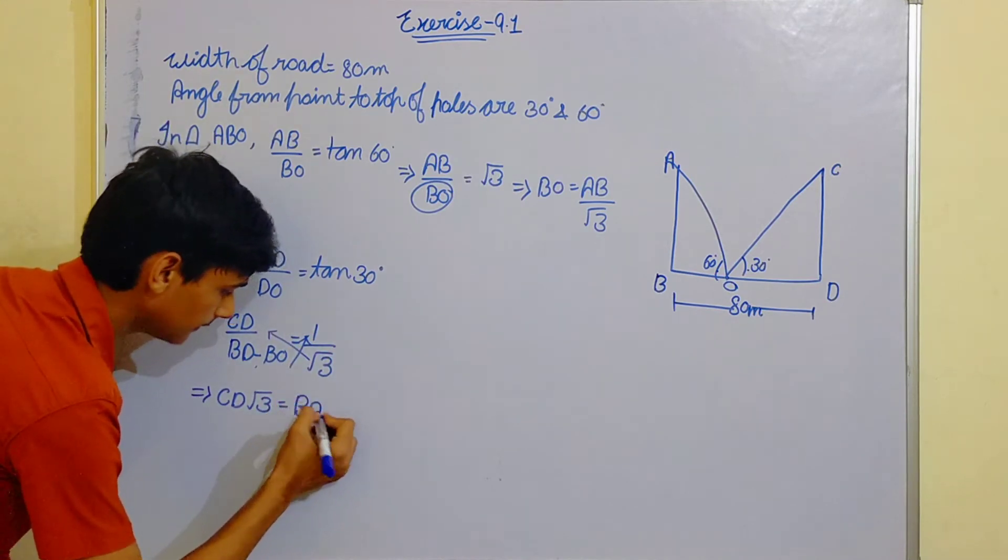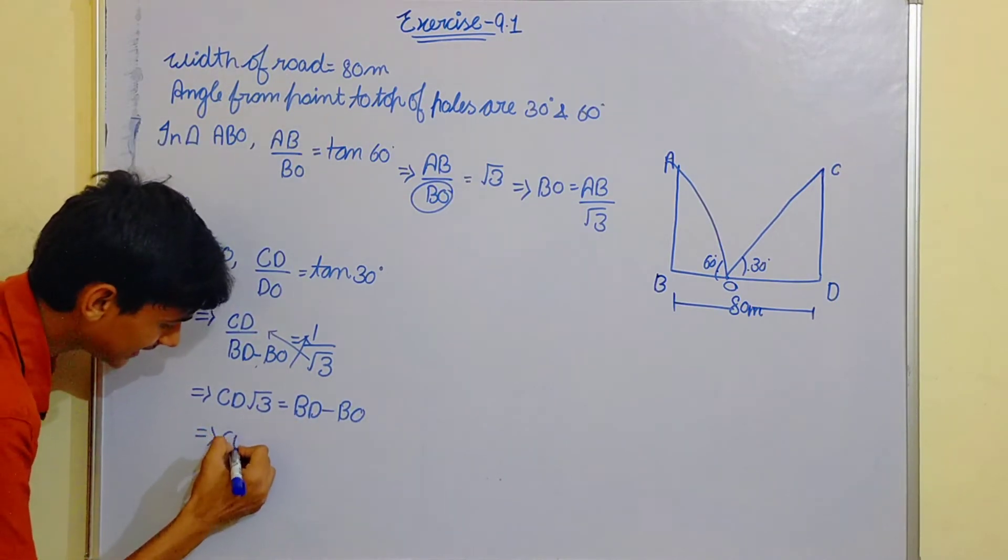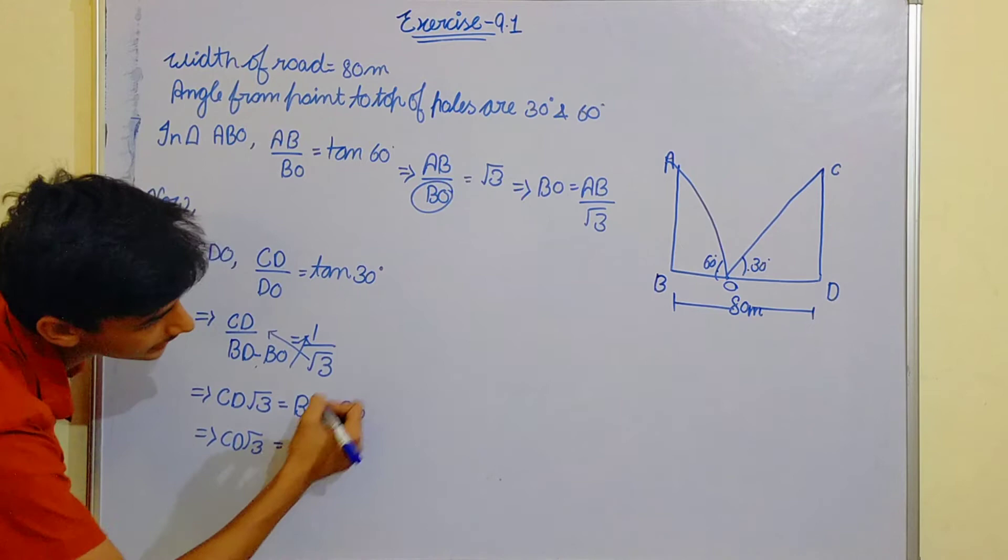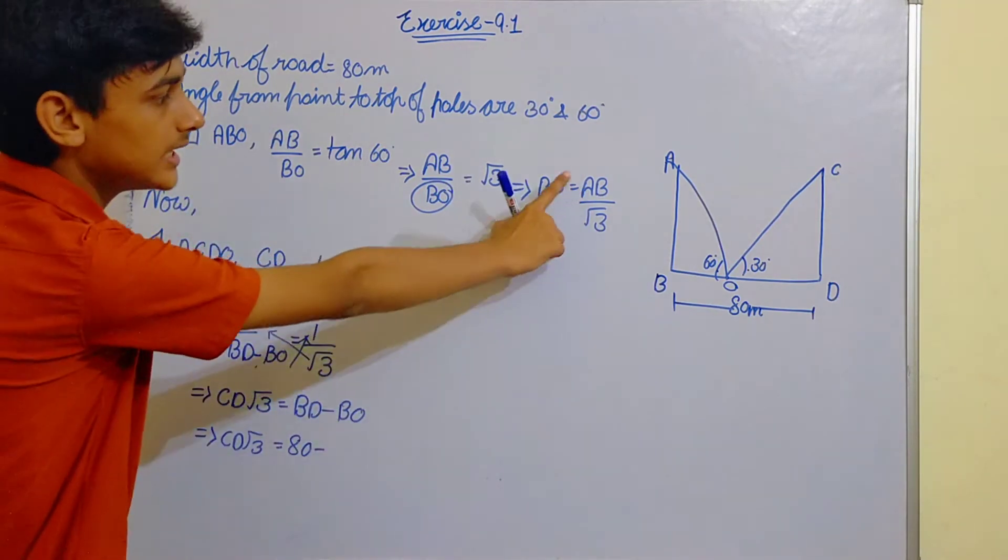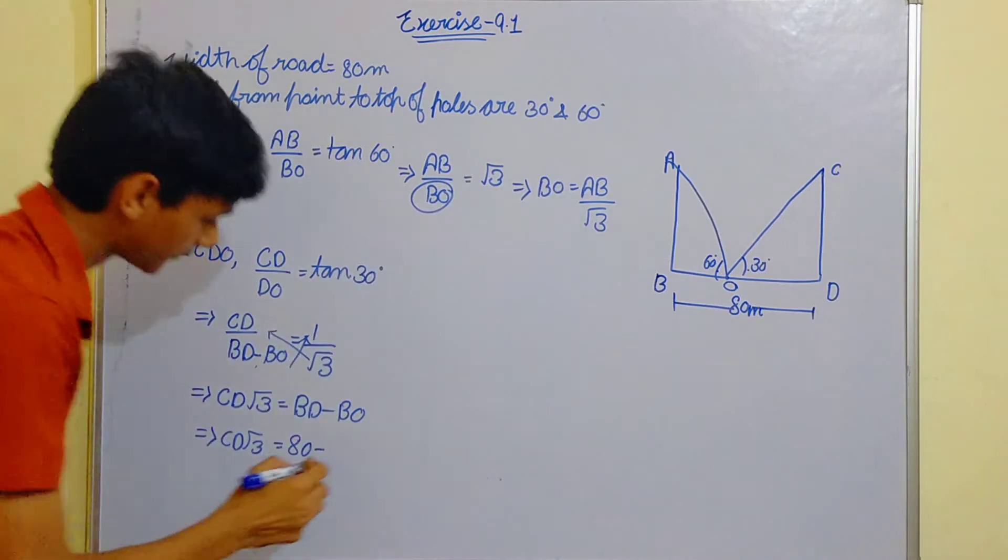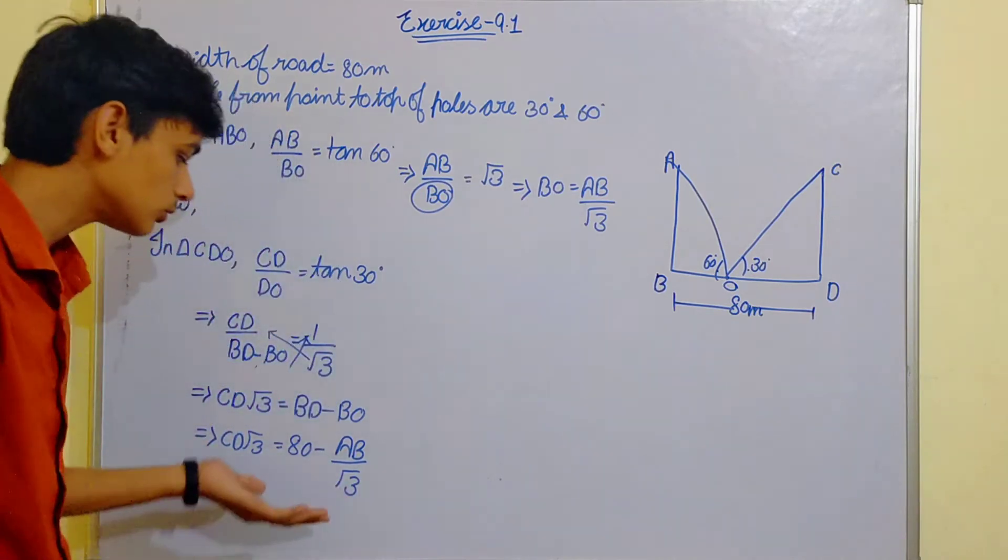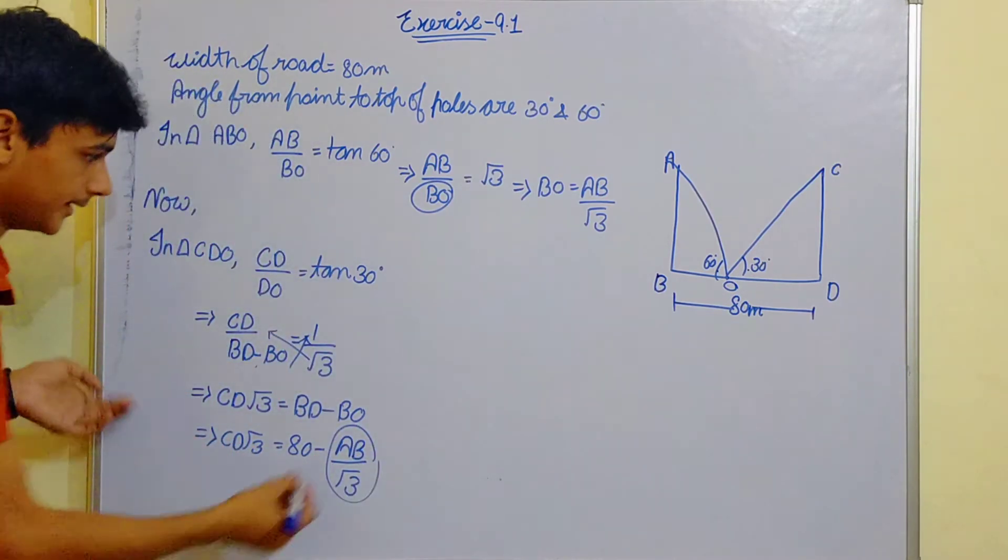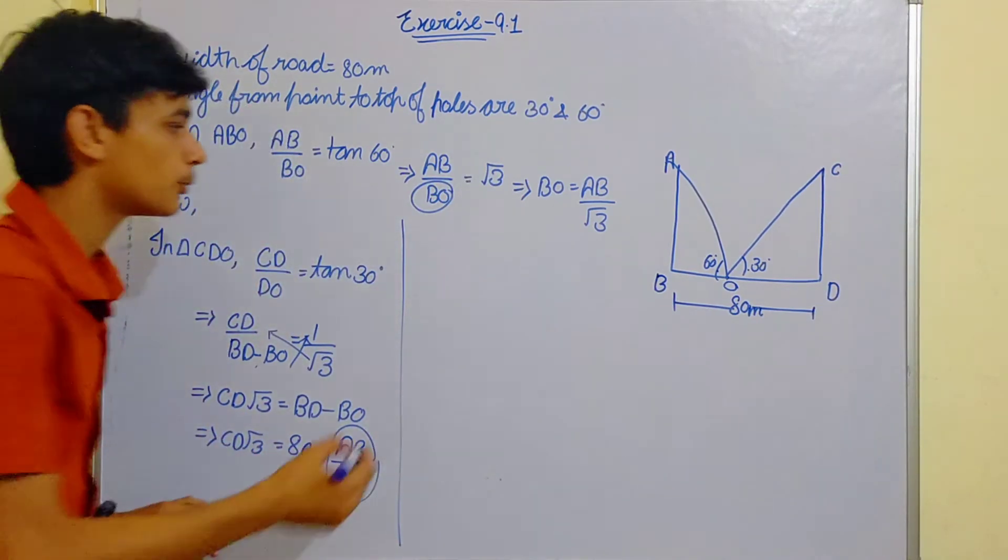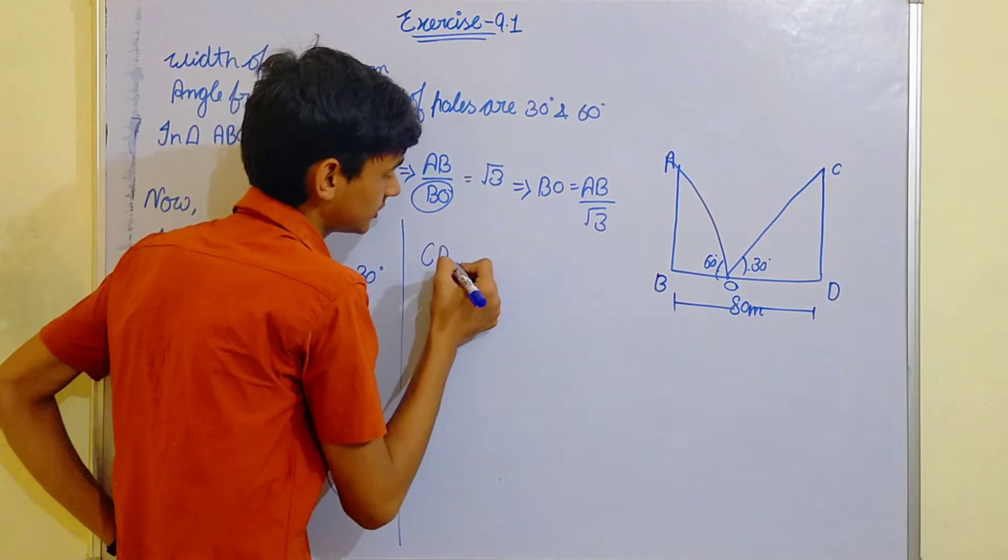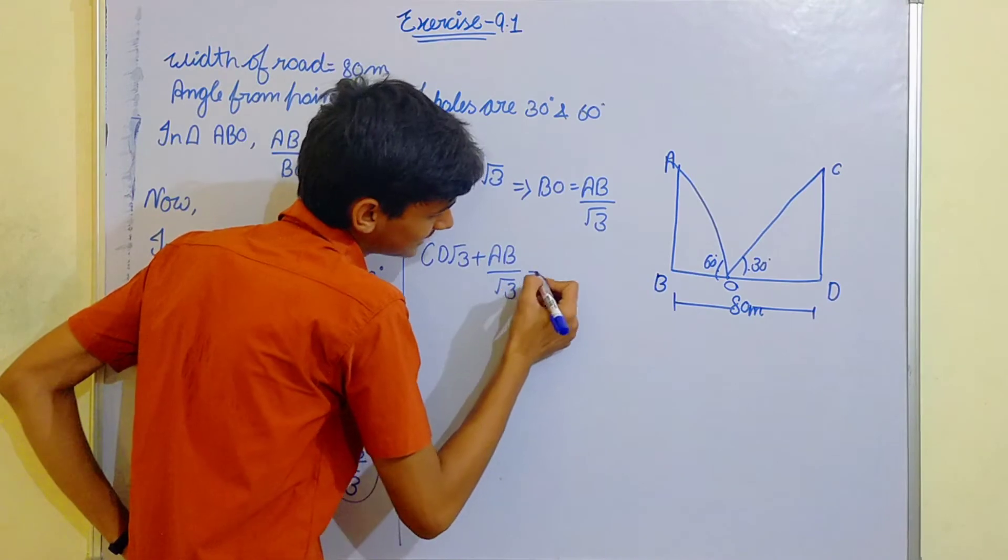So CD root 3 is equals to, multiply on right hand side, BD minus BO. Put the values: CD root 3 is equals to BD which is 80 minus BO which is AB under root 3.